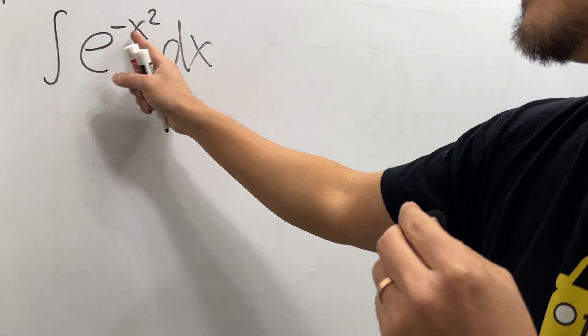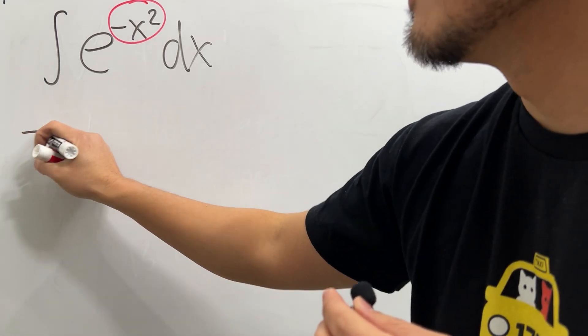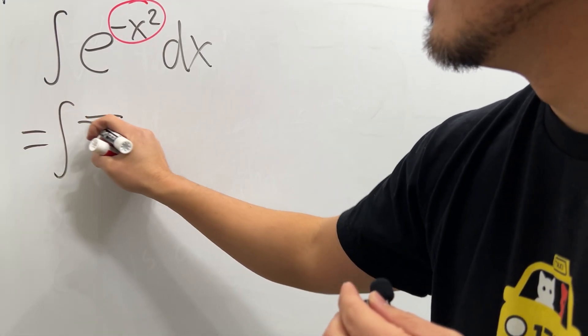What's the calculus 2 way to integrate e to the negative x squared? Well check this out. We are going to use power series. So in fact, this right here is going to be integral of the summation.